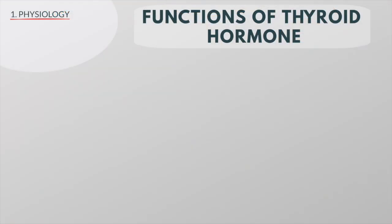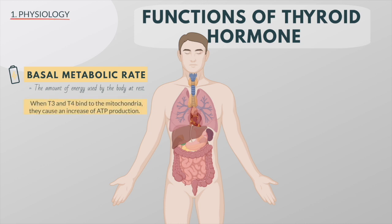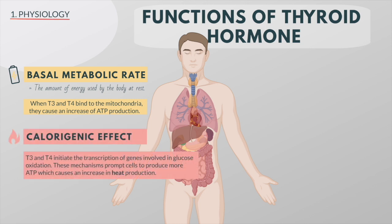The thyroid hormones are often referred to as metabolic hormones because their levels influence our basal metabolic rate — the amount of energy used by the body at rest. When T3 and T4 bind to the mitochondria, they cause an increase in ATP production. In addition, T3 and T4 initiate the transcription of genes involved in glucose oxidation. These mechanisms prompt cells to produce more ATP, which causes an increase in heat production. This so-called caloregenic effect raises the body temperature.